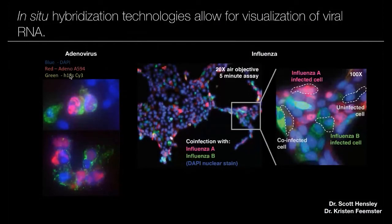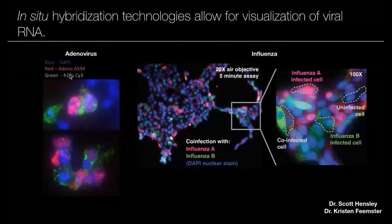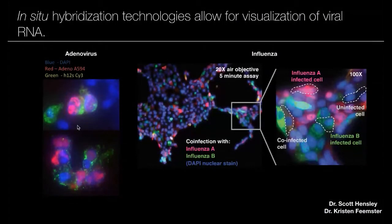Out of this nasopharyngeal swab, we're detecting adenovirus using a rapid technology that we were evaluating as a diagnostic assay at the time. In the other image, you can see a field of cells infected with both influenza A and influenza B. Through bioinformatic clever tricks for probe design, we were able to design probes that allowed us to target one virus and not the other and prove that we could discriminate these different viral subtypes.